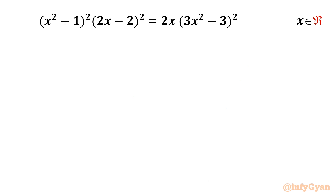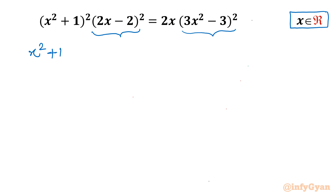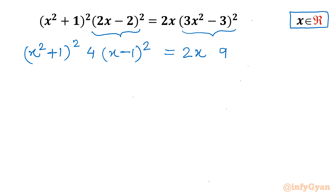The equation is hexic, so we will have 6 solutions. Let's find out how many solutions are real valued. We get started by taking 2 common from the second bracket and 3 common from the third bracket. Writing (x² + 1)² as it is, taking 2 common gives 2², so we write 4 times (x - 1)². On the right hand side, taking 3 common gives 3², that means 9 times (x² - 1)².